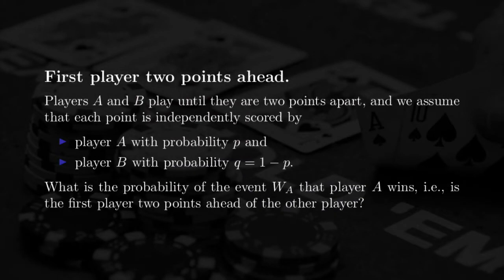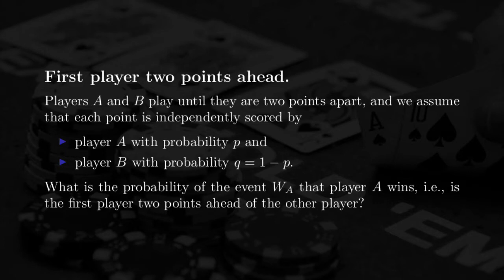We assume that two players, A and B, play until they are two points apart, and we assume that those players are not evenly matched — meaning that A and B don't have the same probability of scoring each point. More precisely, each point is independently scored by A with probability P and by player B with probability Q. The winner is the first player who is two points ahead of the other, and the goal is to find the probability of the event W_A, that player A wins.